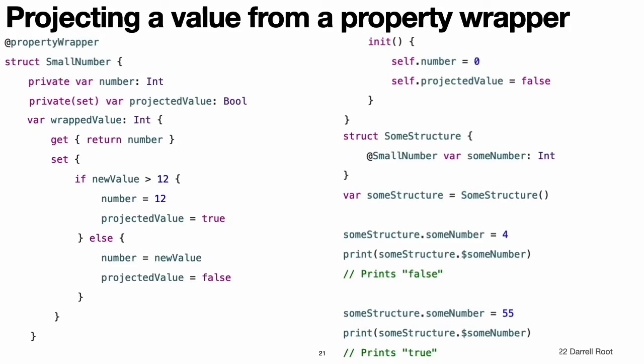Projecting a value from a property wrapper: in addition to the wrapped value, a property wrapper can expose additional functionality by defining a projected value. For example, a property wrapper that manages access to a database can expose a flush database connection method on its projected value. The name of the projected value is the same as the wrapped value, except it begins with a dollar sign. Because your code cannot define properties that start with the dollar sign, the projected value never interferes with properties you define.